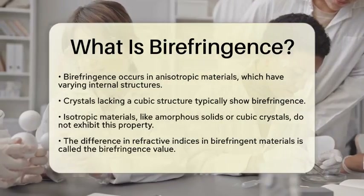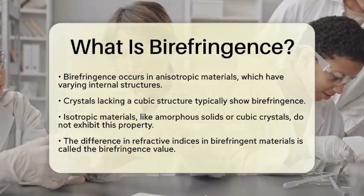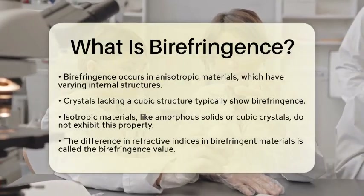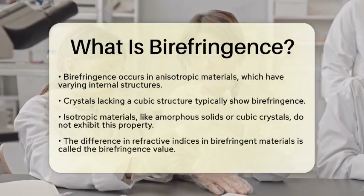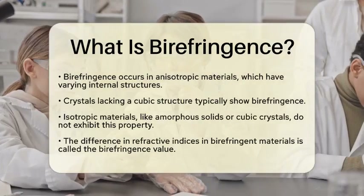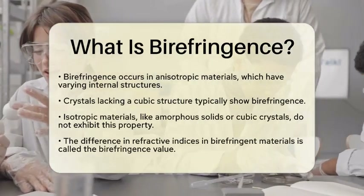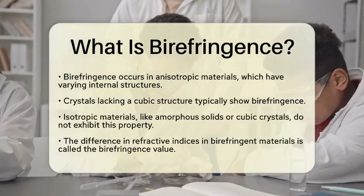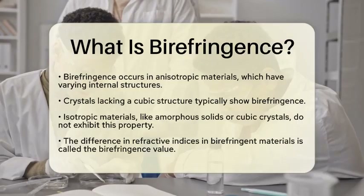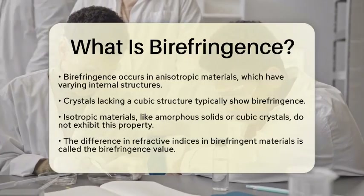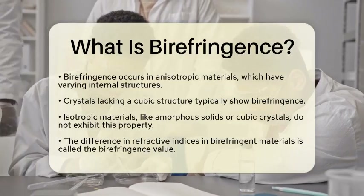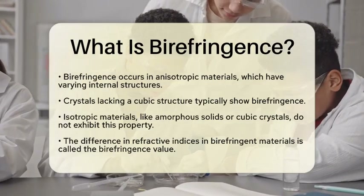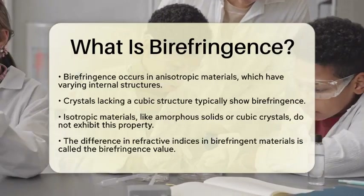The difference between the two refractive indices in a birefringent material is known as the birefringence value. When thin sections of these materials are viewed under polarized light, you can see interference colors. This technique is commonly used in chemistry and mineralogy to identify different substances.